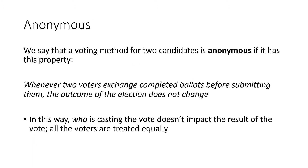A voting method for two candidates is anonymous if it has this property: whenever two voters exchange their filled-out ballots before submitting them, the outcome of the election doesn't change. Envision two people walking up to the voting booth and right before they put them in the ballot box, they swap papers without changing what's written, and then put them in the box. In this way, anonymous means that who is casting the vote doesn't impact the result — all voters are treated equally, and my vote isn't worth more or less than yours.